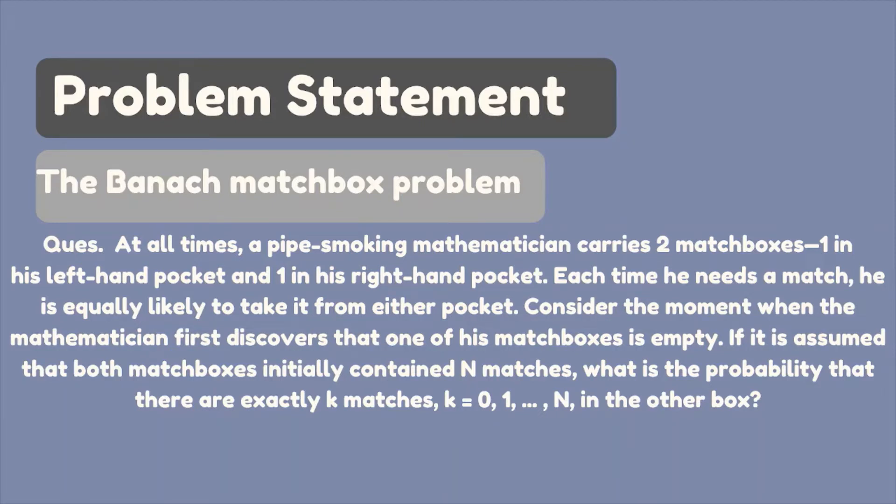Consider the moment when the mathematician first discovers that one of his matchboxes is empty. If it is assumed that both matchboxes initially contain N matches then what is the probability that there are exactly k matches, k is from 0 to N in other box.